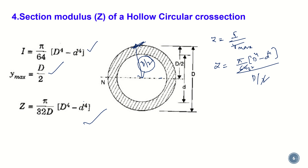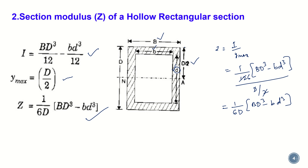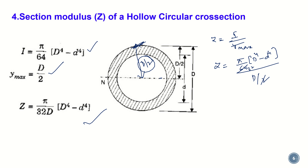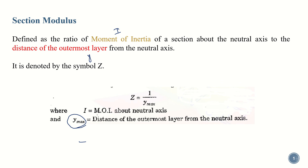All four section modulus formulas should be remembered as they correspond to the basic geometrical sections — rectangular beams and circular beams — most commonly encountered. To summarize: solid rectangle Z = bd²/6; hollow rectangle Z = (1/6D)(BD³ − bd³); solid circle Z = πd³/32; hollow circle Z = (π/32D)(D⁴ − d⁴). If you know Z = I/y_max and the moment of inertia formulas from mechanics, you can always derive these. Numerical problems on section modulus and bending equation will be solved in the coming classes.